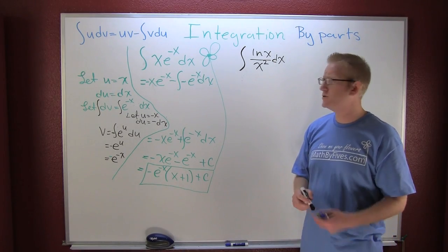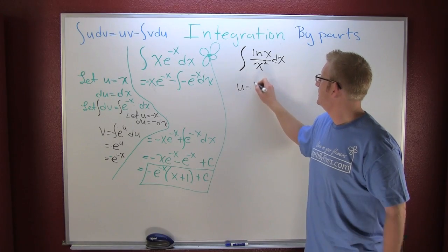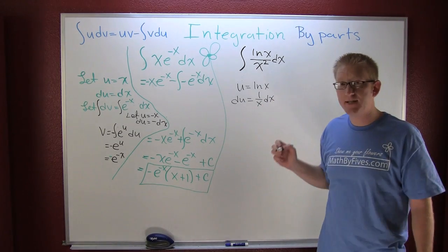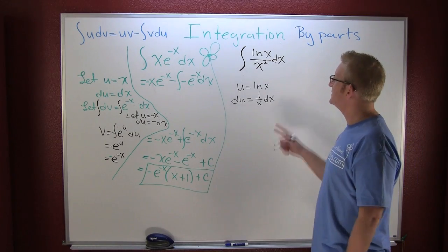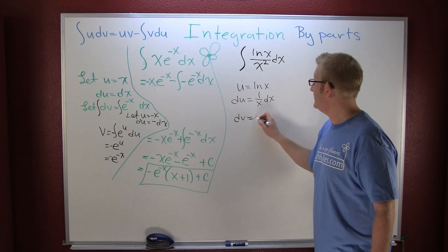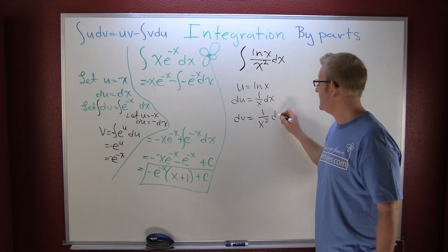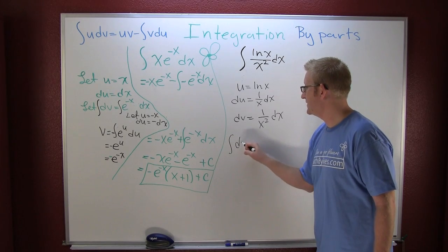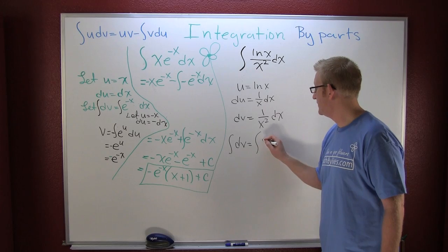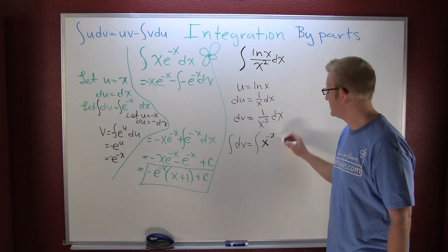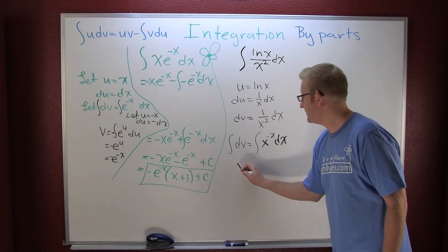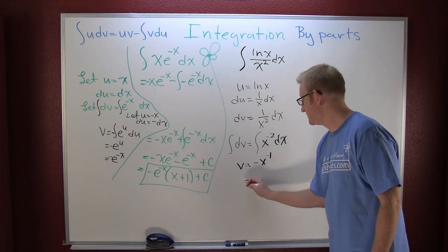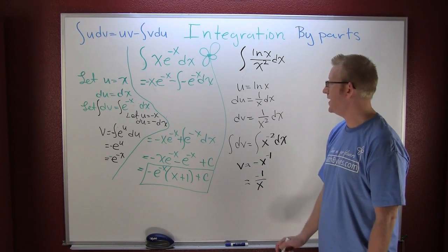So then u is going to be the natural log of x, so then du is one over x dx. That means my other part dv is going to be one over x squared dx. I'm going to try to integrate each one of these sides. The integral of dv and the integral of x to the minus two dx. Left on the left side I got v, and on the right I add one and divide by it, so I have minus x to the minus one, which is minus one over x.